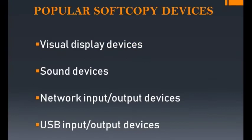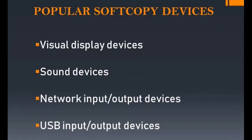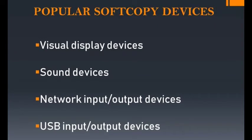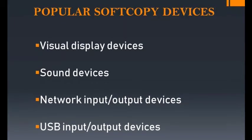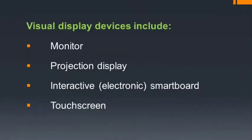The major soft copy devices are classified into four groups: visual display devices, sound devices, network input or output devices, and USB input or output devices. Visual display devices include monitor, projection display, interactive or electronic smartboard, and touchscreen.